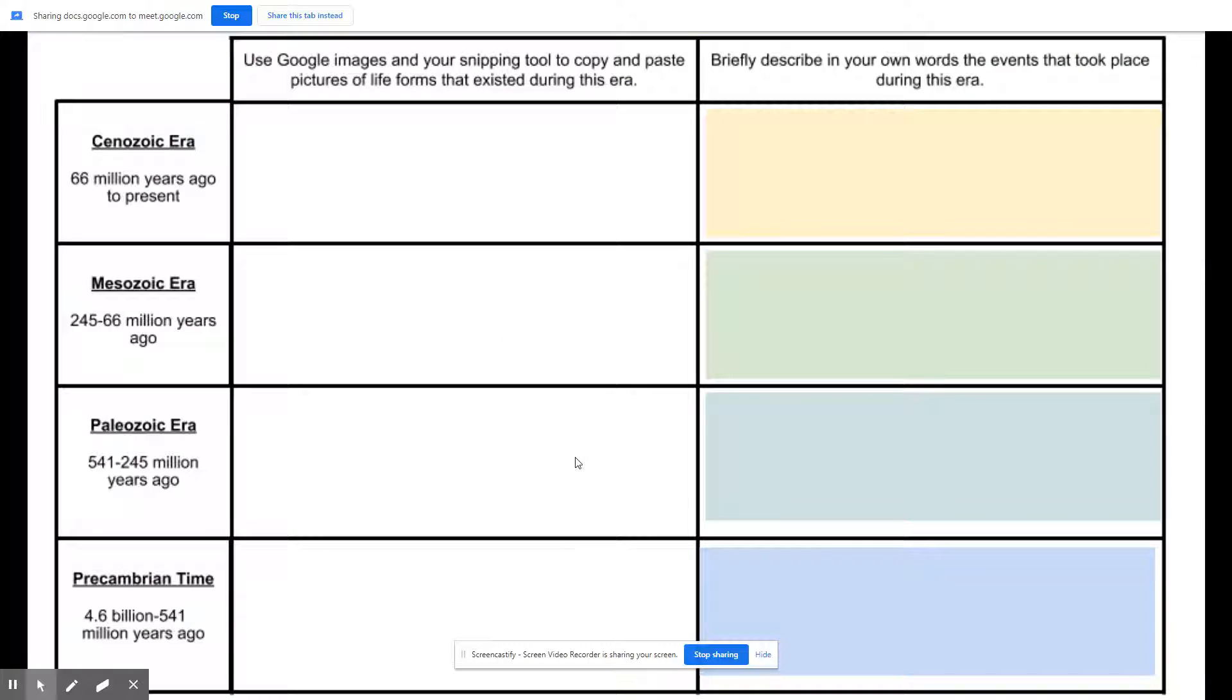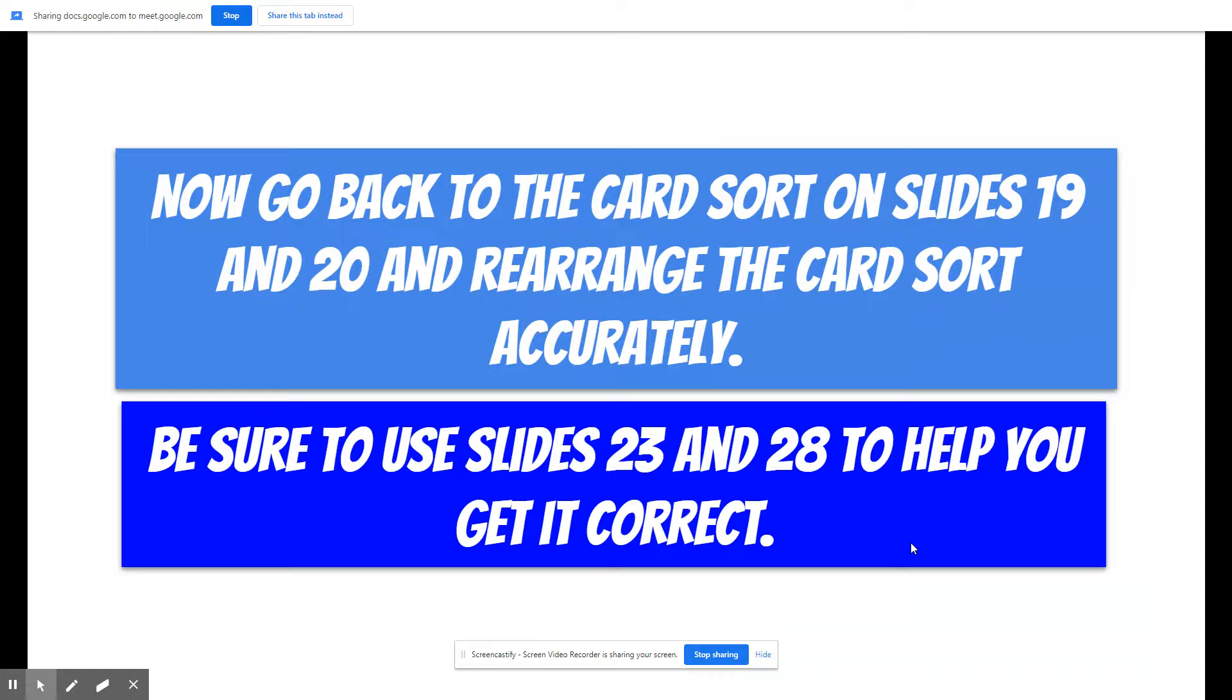Once you're done with this, which is on this slide, here you can write in here organisms that existed during the era, description of what was going on. Then when you're done with that, go back to the card sort and rearrange the cards accurately.